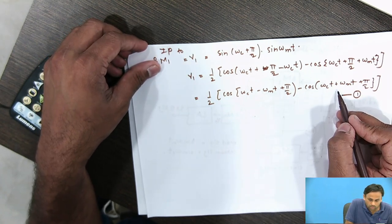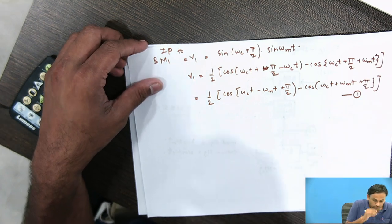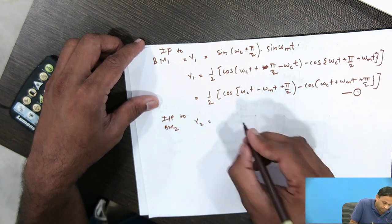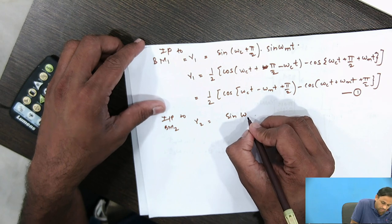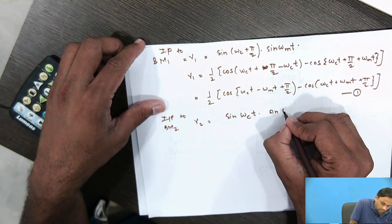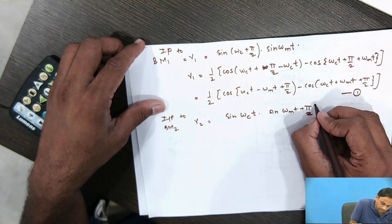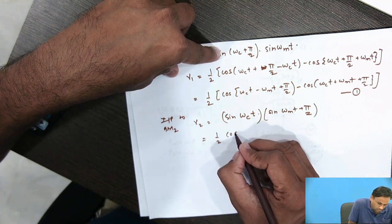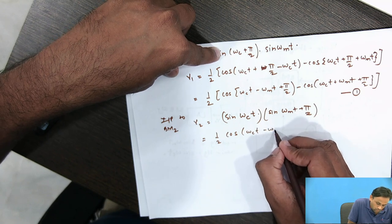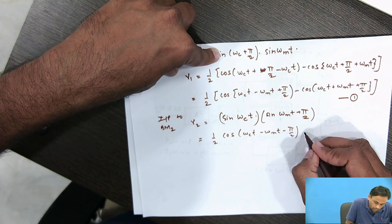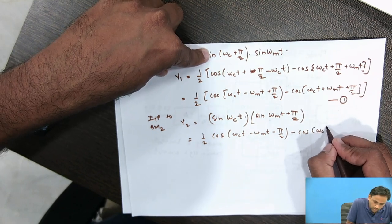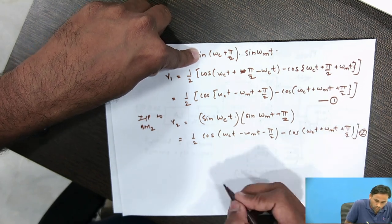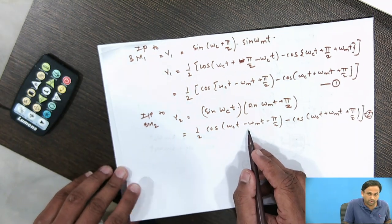For BM2, the output v2 has the carrier signal given directly as sin(ωct) and the modulating signal phase shifted by +90°. Solving this equation gives: v2 = ½[cos(ωct − ωₘt − π/2) − cos(ωct + ωₘt)]. Again, the first term is the lower sideband and the second term is the upper sideband.